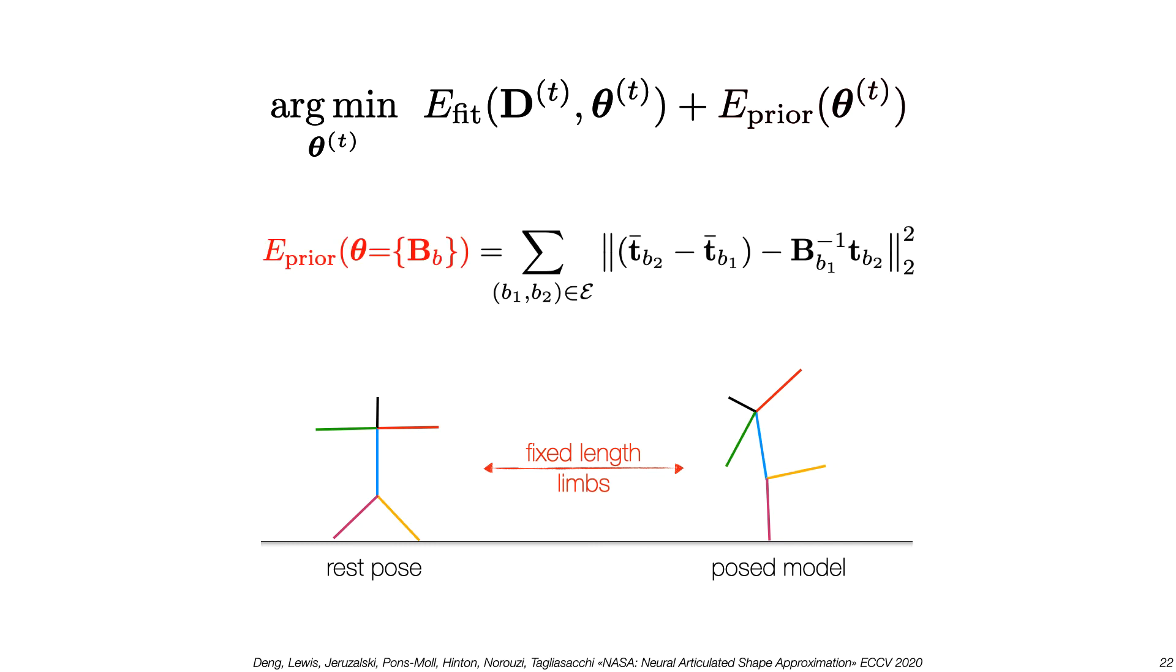Finally, for the prior term, we simply ask the tracker to preserve limb lengths. More complex priors could be easily integrated here as well.